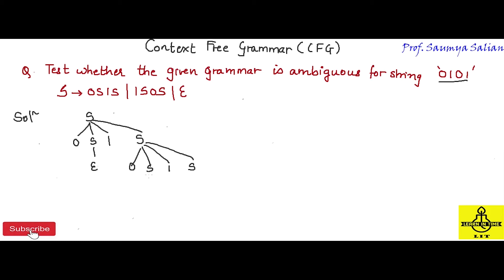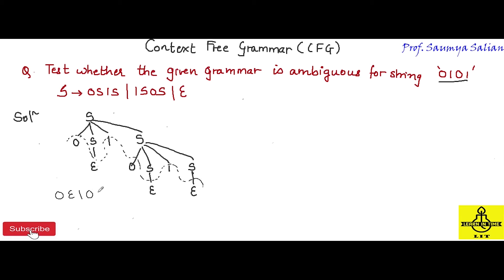Checking the leftmost symbol — here my symbol is S. For this S, I use the derivation S → epsilon, and for the final S, I also use S → epsilon. So the leaf nodes generated are: 0, epsilon, 1, 0, epsilon, 1, epsilon — which gives us 0, 1, 0, 1. That's how I construct the string 0101 using the first parse tree.